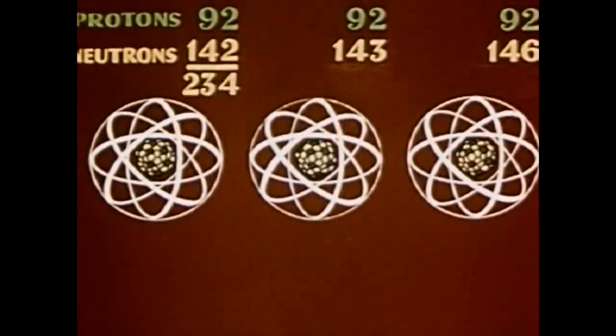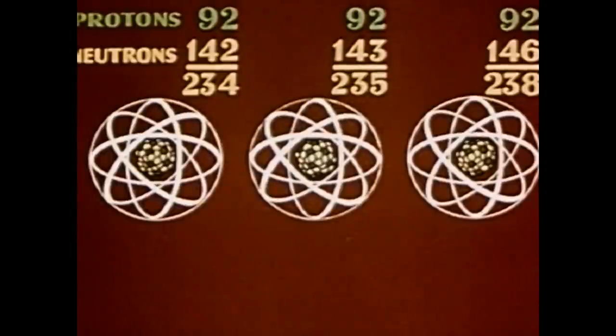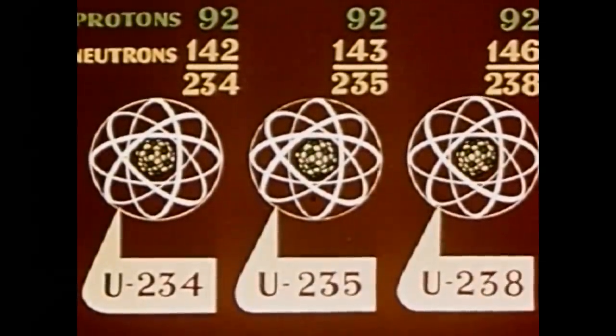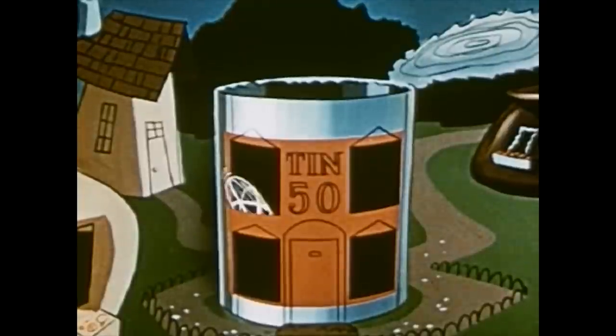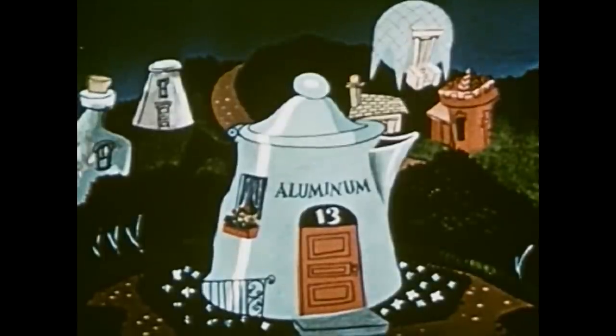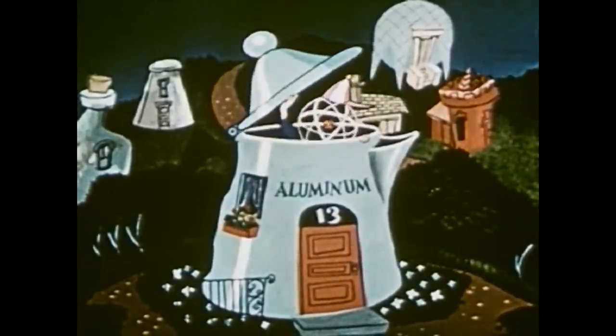That means uranium has three natural isotopes: U-234, U-235, and U-238. Some elements, such as tin, have a great number of natural isotopes. Others, such as aluminum, have only one isotope.